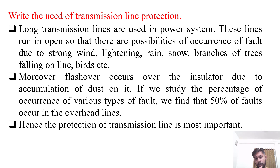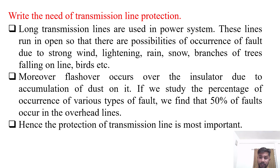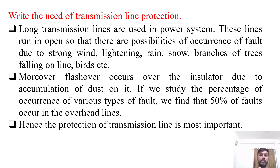If we study the percentage of occurrence of various types of faults, we find that 50% of faults occur in overhead transmission lines. So the protection of transmission lines is more important than any other type of protection employed in the system.